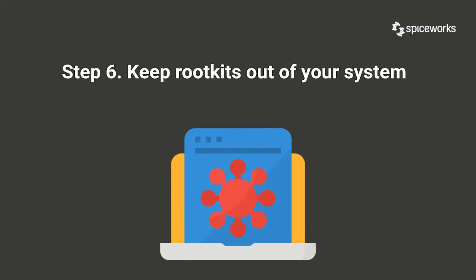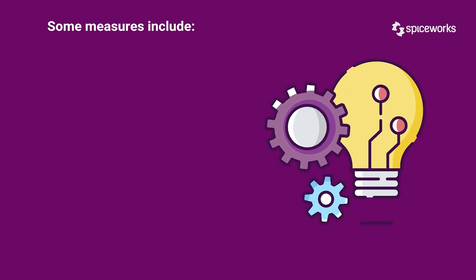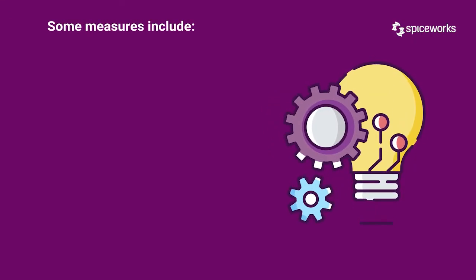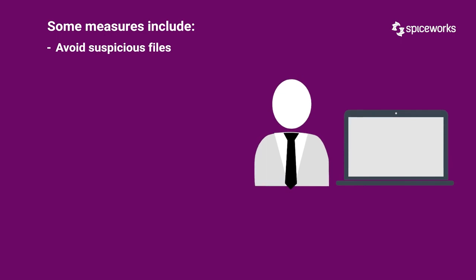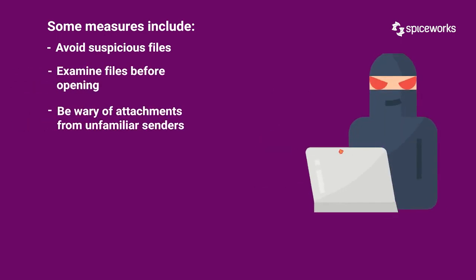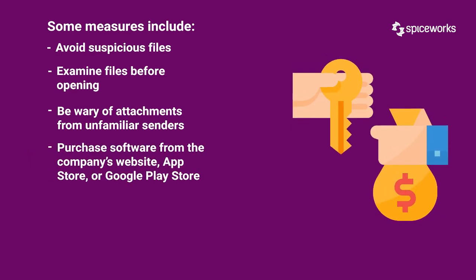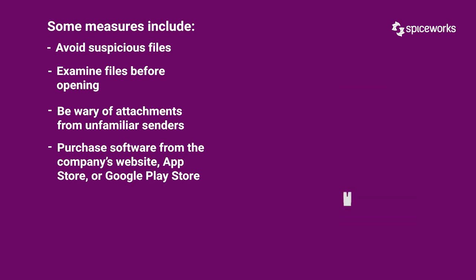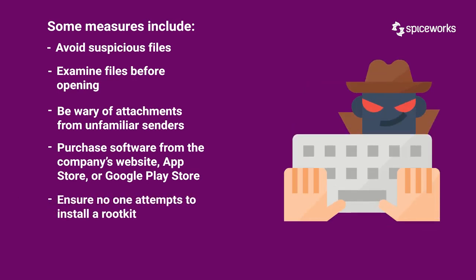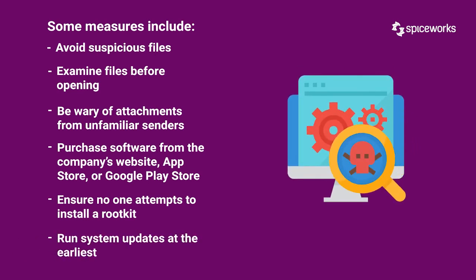Keep rootkits out of your system. The simplest way to avoid needing to remove a rootkit infection is to bypass the attack altogether. Some measures you can take: avoid suspicious files at all costs — even files supplied by reliable people should be thoroughly examined before being opened. Always be wary of attachments from unfamiliar senders, as they could be online scams. Purchase software from reliable sources such as the manufacturer's website, the App Store, or Google Play Store, and scrutinize the terms and conditions to ensure no one attempts to install a rootkit on your system. Run system updates at the earliest, as these updates are frequently released to address newly found vulnerabilities that attackers can use to access the device.